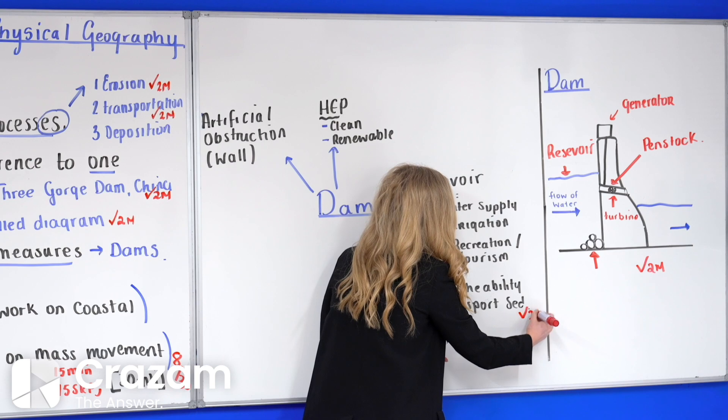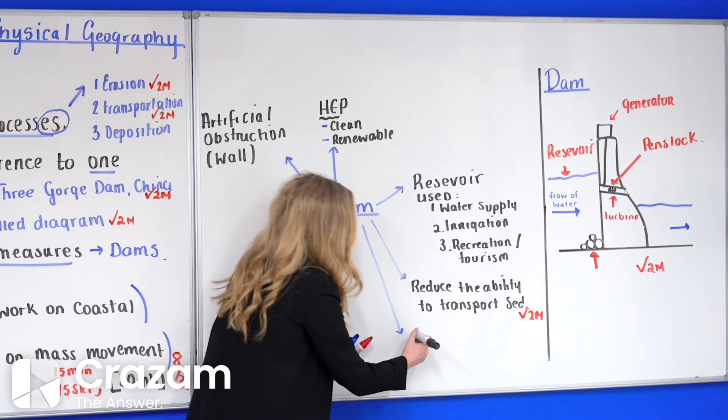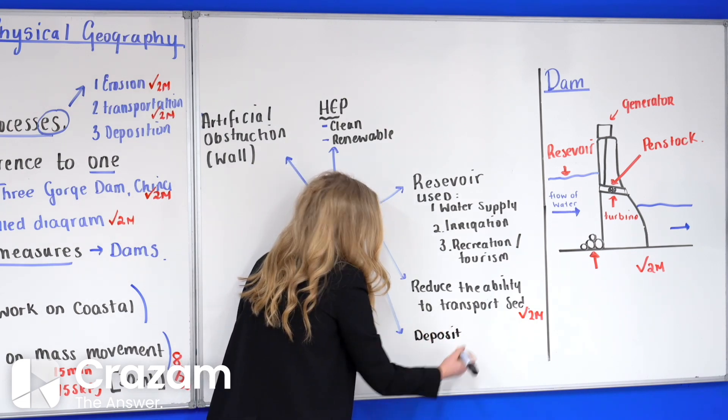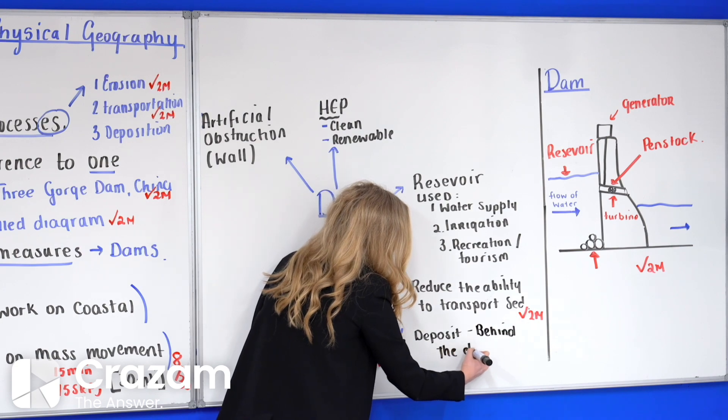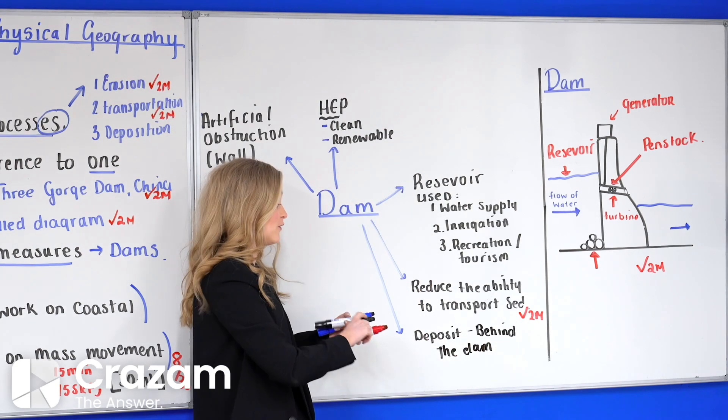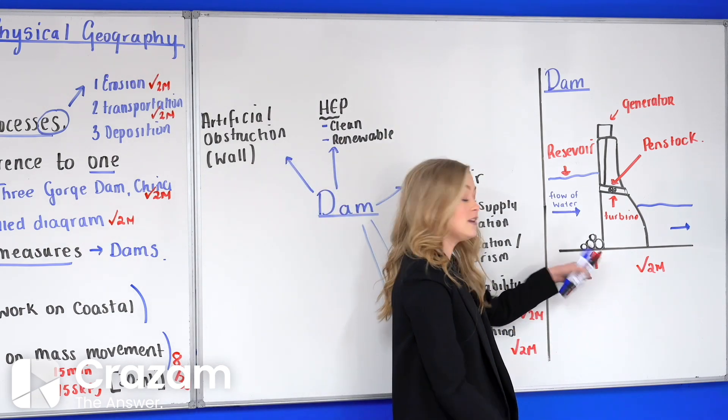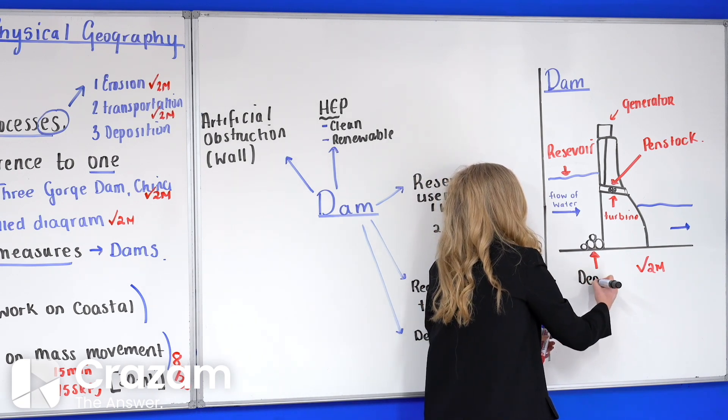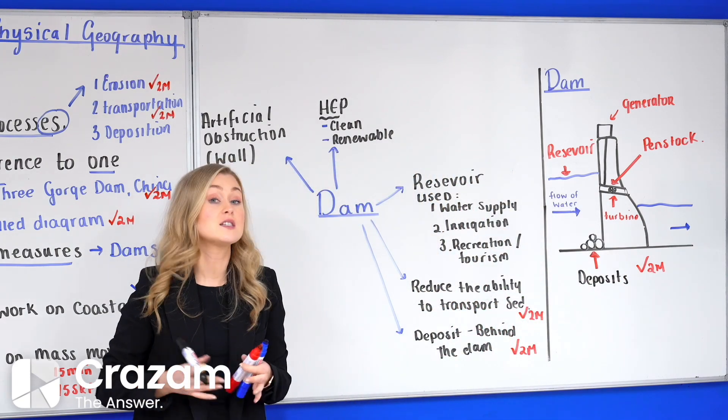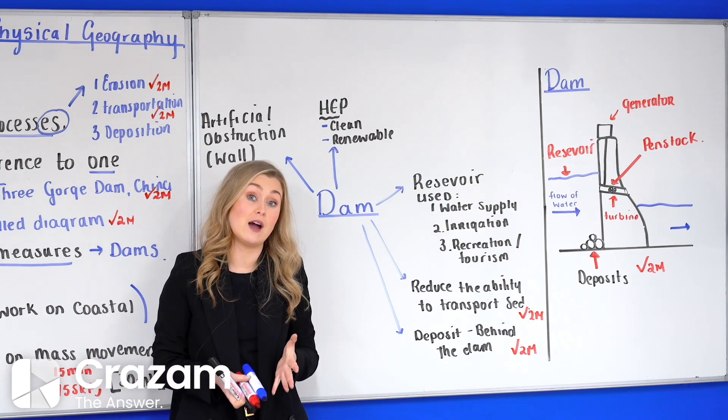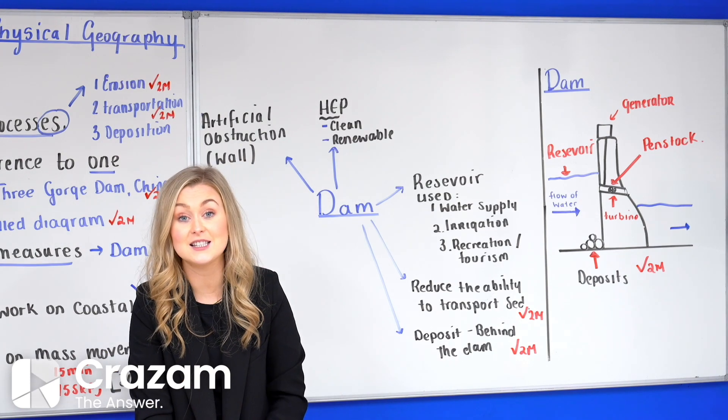We also mentioned here it forces the river to deposit behind the dam where it would usually be transported down to the floodplains. That point there will also get us another two marks. The build up of deposition or deposits in the reservoir will push water levels up at times and dredging will be required. So here you'll notice I've labeled this in: this is our deposits. Deposits sometimes can build up and cause navigation problems, which is why we say that it needs to be dredged - the water taken out of the reservoir, that artificial lake, and then the sediment removed.